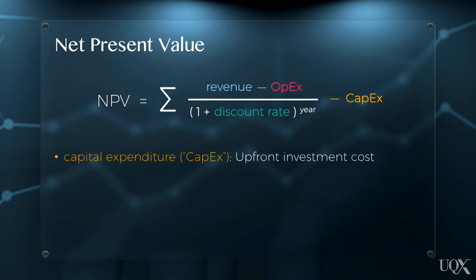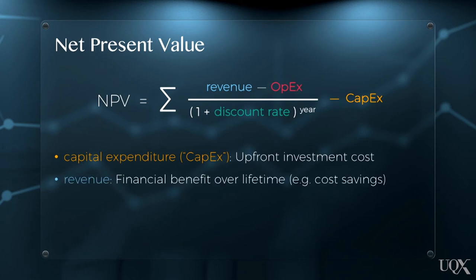Capital expenditure, or CAPEX, is the upfront cost to design and implement a project. In our LED example, this might include the cost of an energy audit, light bulbs, and the time taken to install them. Revenue is the financial benefit from the project over its lifetime. For LED lighting, this will be the dollars saved due to lower power use. For solar PV, revenue may also include the sale of any excess electricity to the grid.